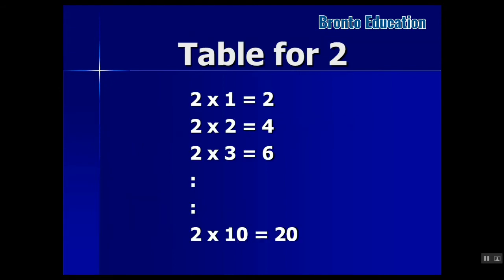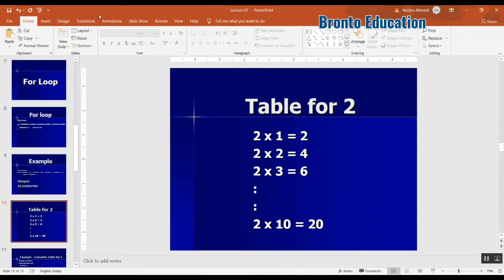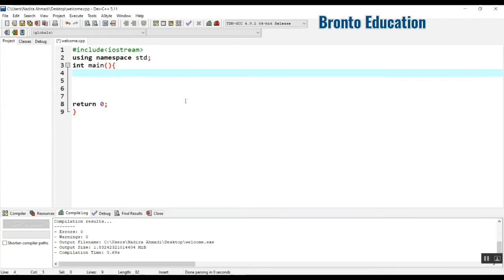Now, how about if we make a multiplication table for 2? For example: 2 into 1 equals 2, 2 into 2 equals 4, 2 into 3 equals 6, 2 into 4 equals 8, up to 2 into 10 equals 20, or even 2 into 20 equals 40. Let's try this inside Dev C++. You can use a for loop or while loop — either one works.